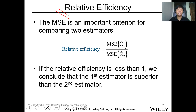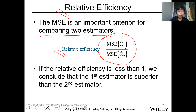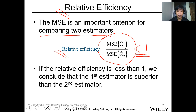Another parameter we can utilize in estimation is the relative efficiency. Relative efficiency uses MSE as an important criterion for comparing two estimators. It is equal to the ratio of the MSE of two estimators. If the relative efficiency is less than one, then we can conclude that the first estimator is superior to the second. Note that MSE should be small.